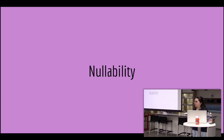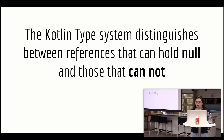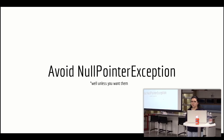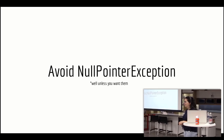Another big concept in Kotlin that's not really a thing in Java is nullability. You can have a variable that holds a null value, or one that can never be null. The Kotlin type system distinguishes between references that can hold null and those that cannot, which helps you avoid null pointer exceptions. Though it's not entirely true that you'll never get NPEs — you can still get them, or your property might not be initialized.